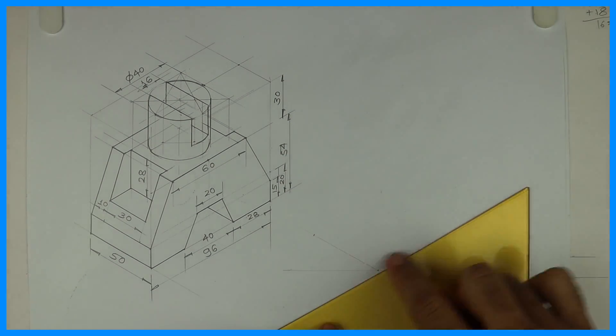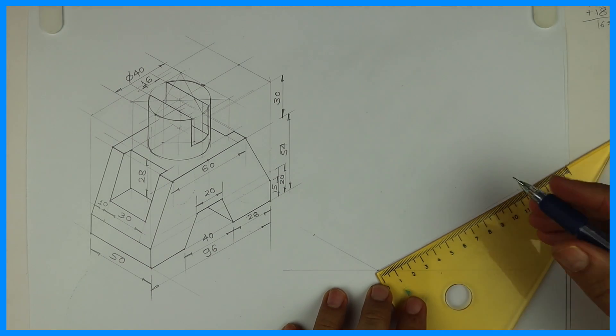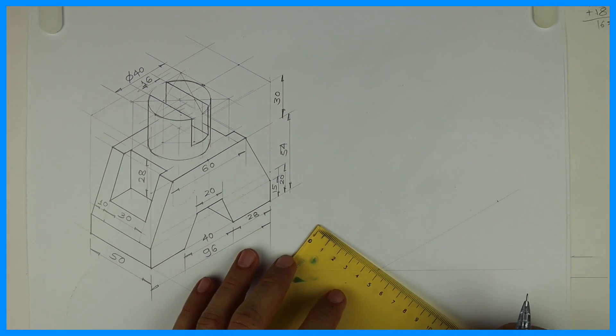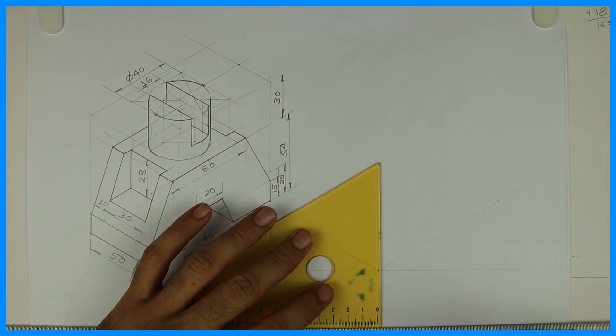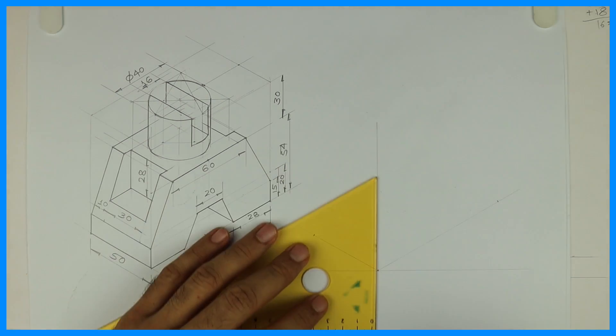First we'll mark length, width, and height. So length is 96, width is 50, and height is 54 plus 30, that is 84.